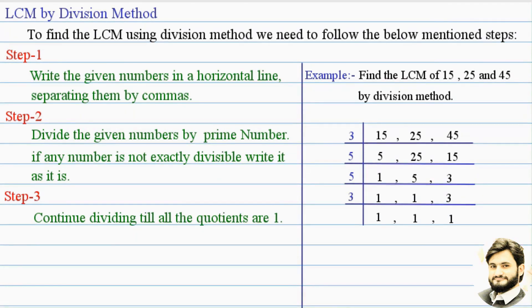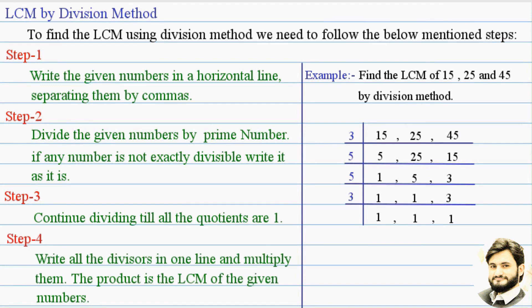Now, step number 4. Write all the divisors in one line and multiply them. The product of these divisors is the LCM of the given numbers. Here, in our example, the divisors are 3,